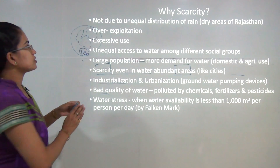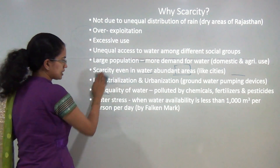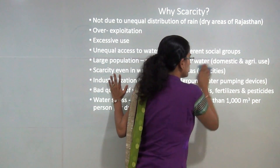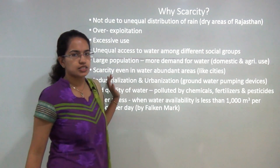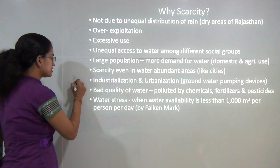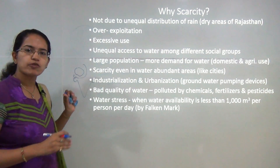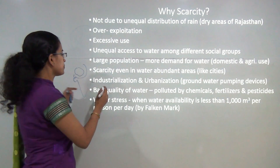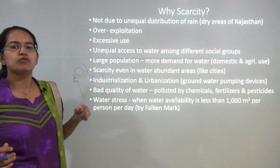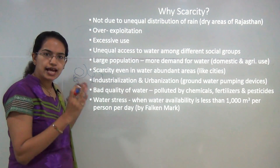Now let's understand the problem of water scarcity and where exactly the problem lies. If I asked most of you, you would say India has rain surplus areas and rain deficit areas — the arid and semi-arid areas would have water deficiency, while the northeast and the Indo-Gangetic plain would be water surplus areas. But this is not the reality.